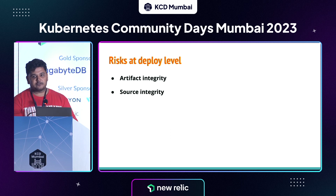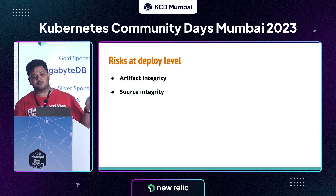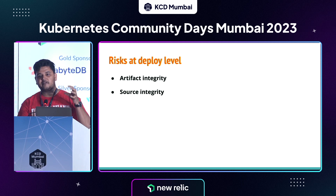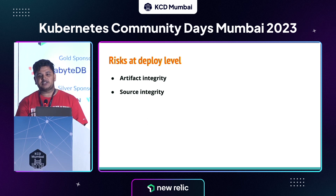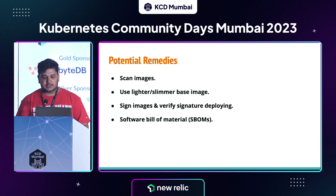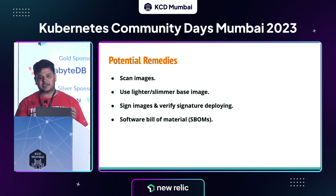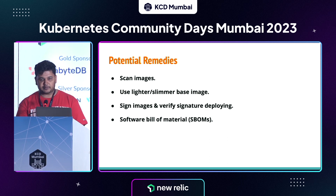At the deploy phase, we have a couple of risks. One is artifact integrity: even if we follow all procedures properly through artifact creation, it doesn't guarantee the artifact is free from known vulnerabilities. Another challenge is source integrity — whether the artifact we are deploying actually comes from the source we intended. Steps we can take include scanning images before deploying to check for known vulnerabilities. We can also use lighter images with fewer packages and dependencies, or consider building distroless images, which many organizations are now considering.